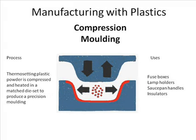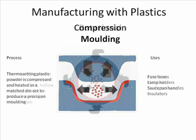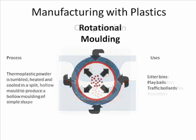Compression moulding: thermosetting plastic powder is compressed and heated in a matched die set to produce a precision moulding. Fuse boxes, lamp holders, saucepan handles and insulators are made this way.